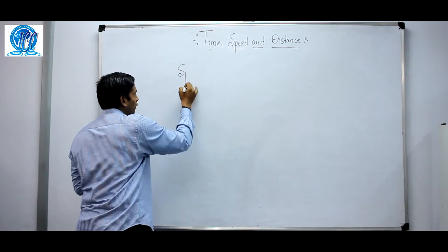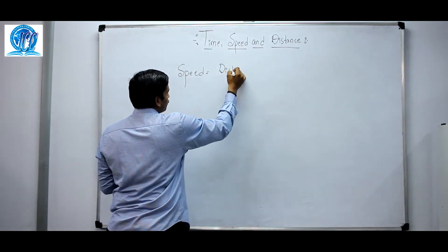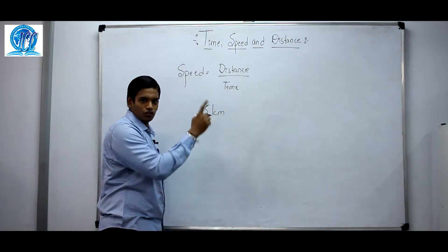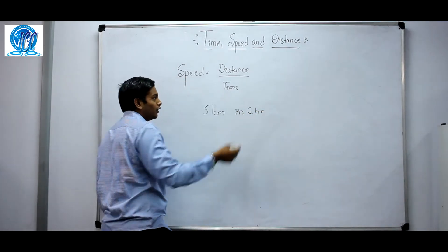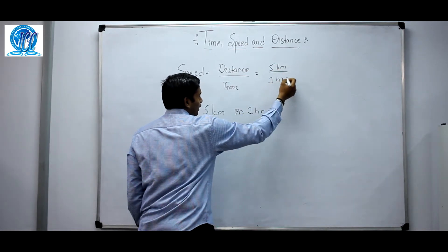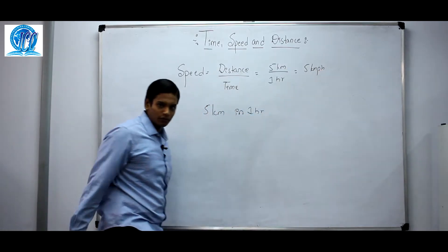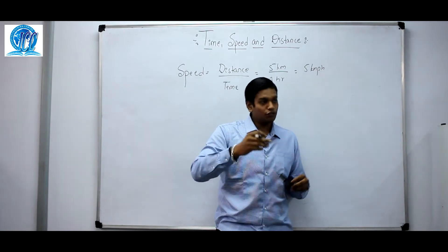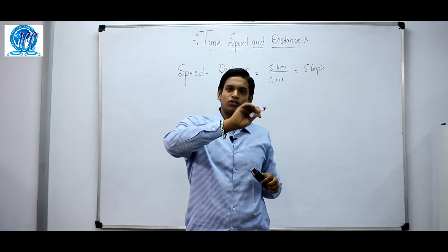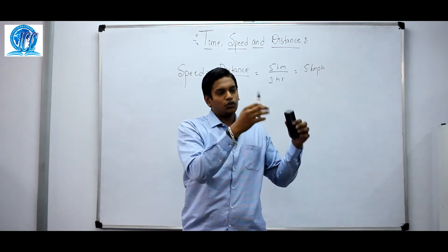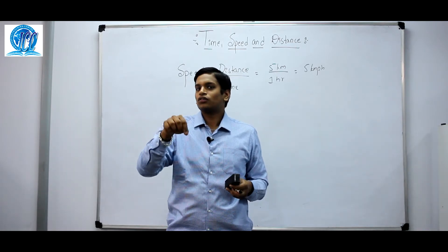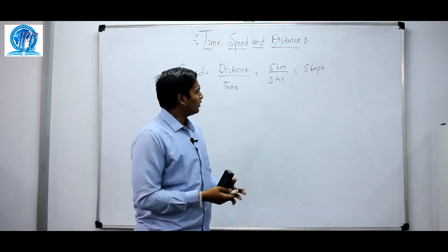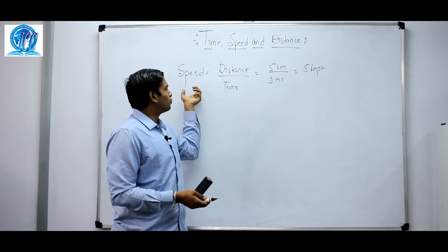First of all, we need to understand the formula. Speed is equal to distance divided by time. For example, if you are covering a distance of 5 km in one hour, your speed is 5 km divided by 1 hour, which is 5 km per hour. If you look at your speedometer in a vehicle, it will always be varying — you start from zero, accelerate, then slow down due to traffic. Whatever the vehicle shows you at any moment is the instantaneous speed. But in problems, we always work with average speed under ideal conditions.